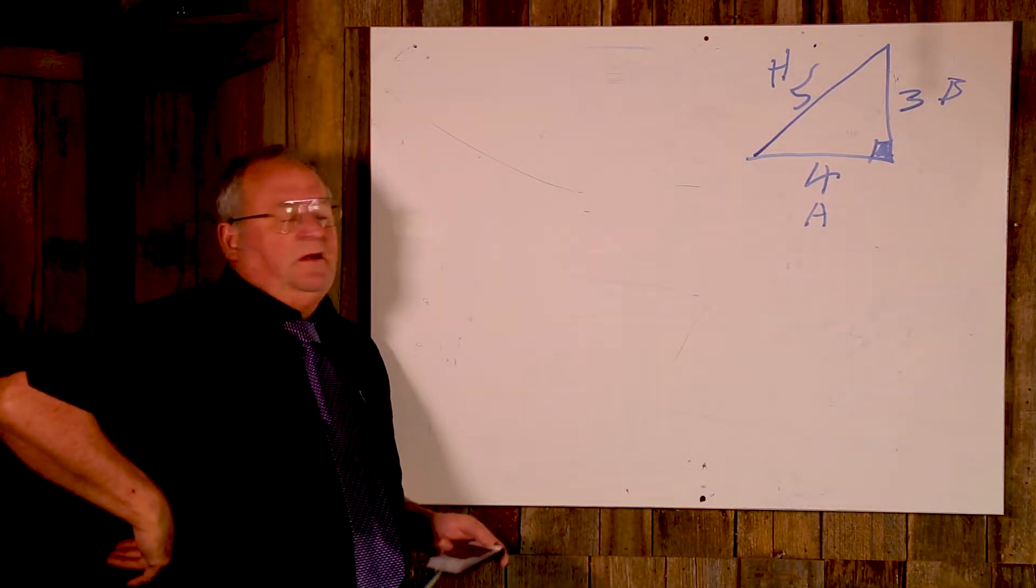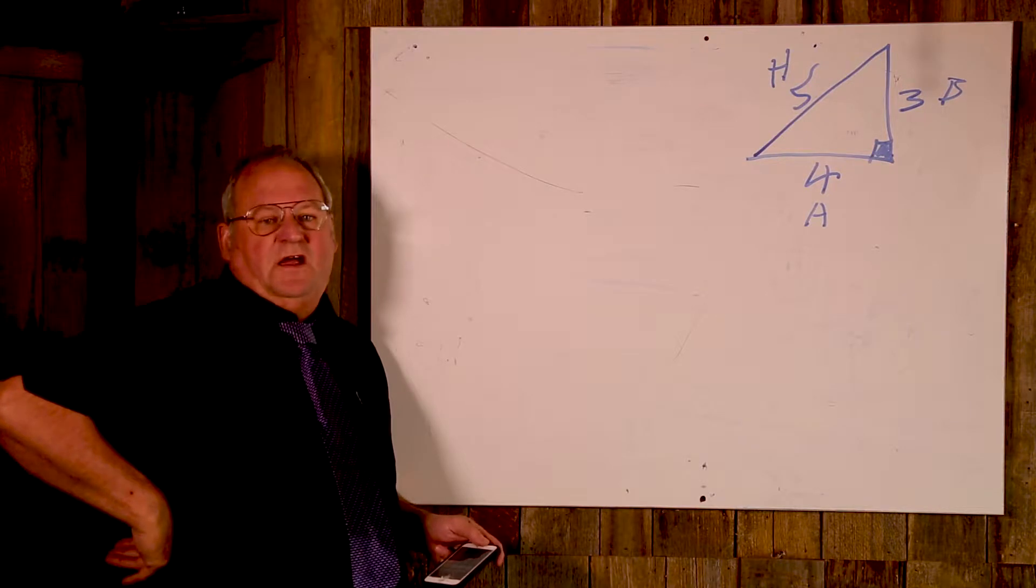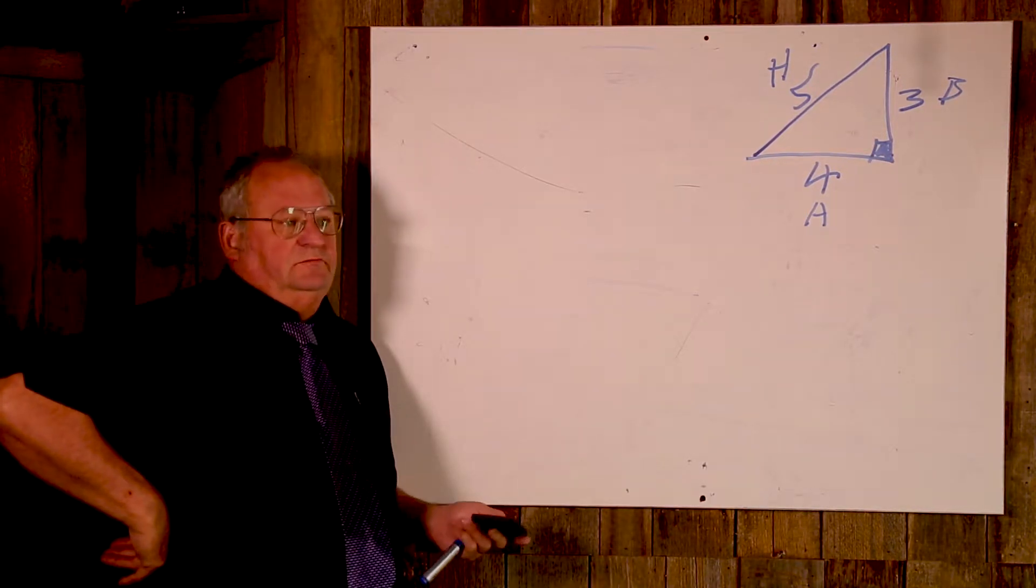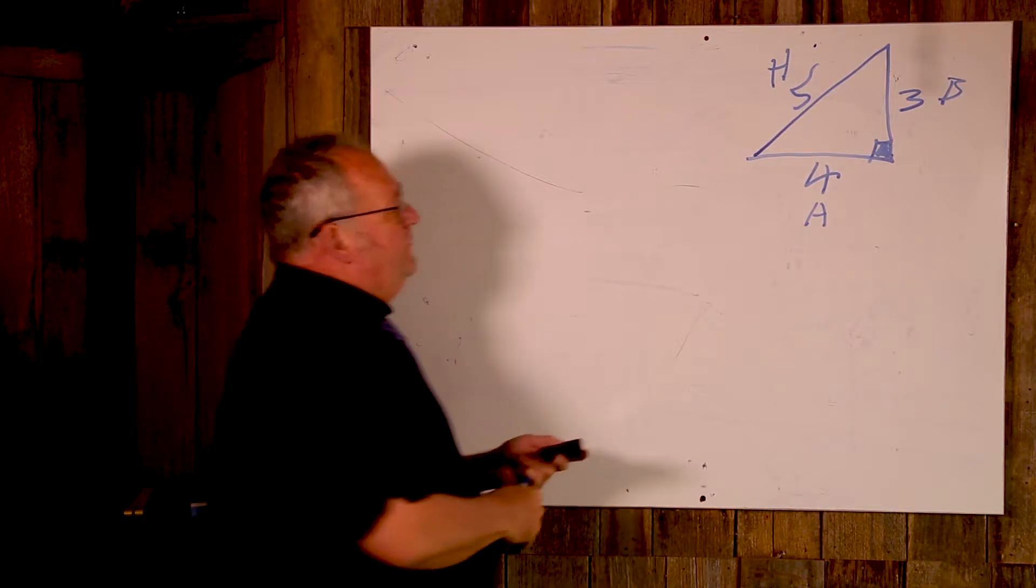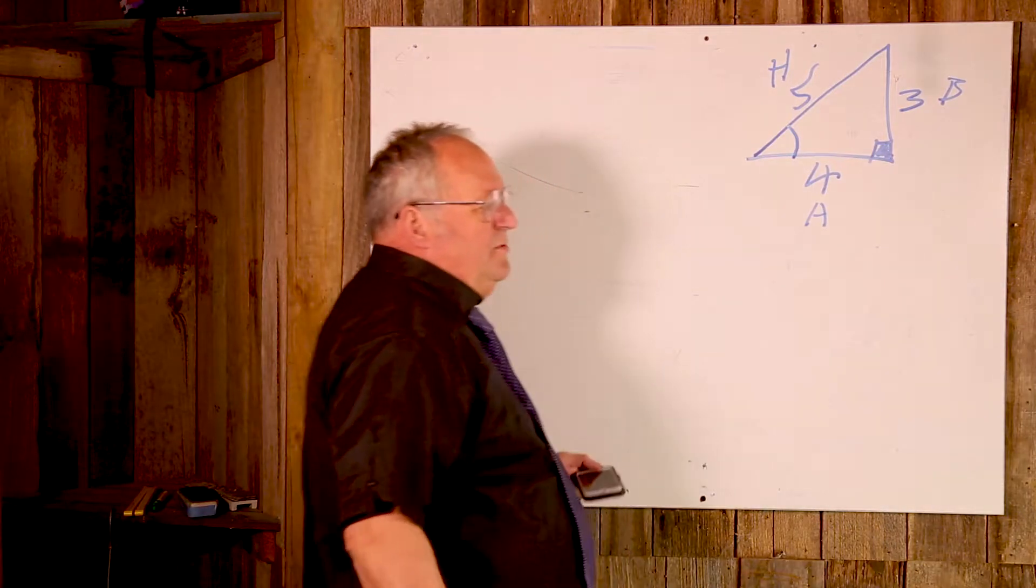G'day, my name's Ian and we're gonna have a look at this 3-4-5 triangle and see if we can work something out with it. The angle is what I'm gonna find. The angle here, as a carpenter roofer, that's really something we need to be able to do.